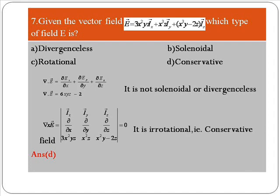Next, we compute the curl: del × E. The result is zero, meaning the field is irrotational. If del × E equals zero, the field is conservative. Therefore option D, conservative field, is the right answer.